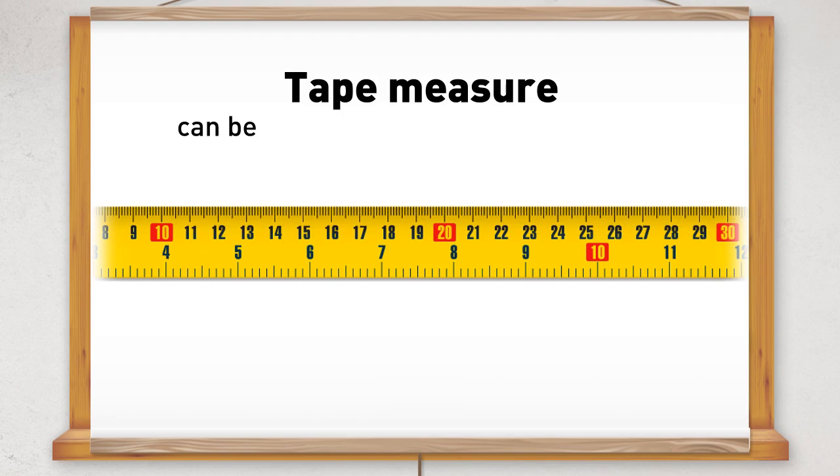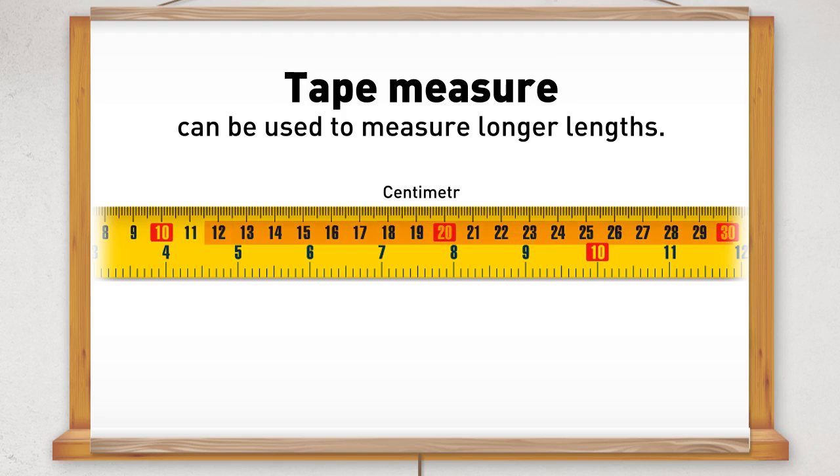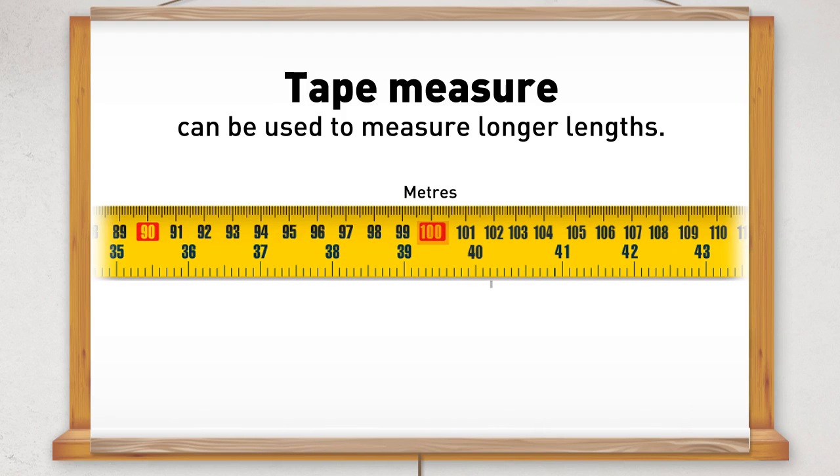Tape measures can be used to measure longer lengths such as the length of your living room. Tape measures show millimeters, centimeters and meters and usually also show imperial measurements.